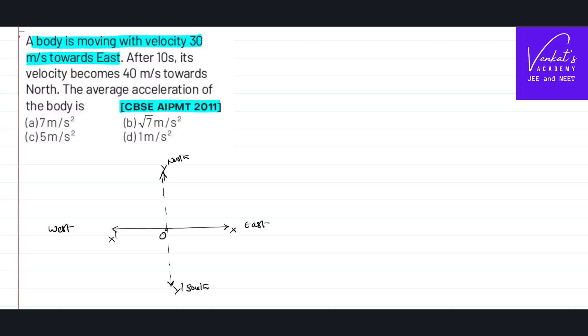So how do I represent that? This way. We shall represent v1 as 30 meters per second. I have shown it towards the East on the paper, that is along positive x-axis.